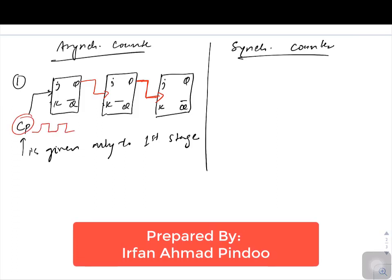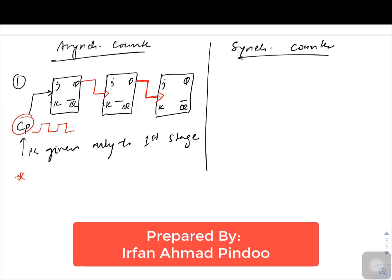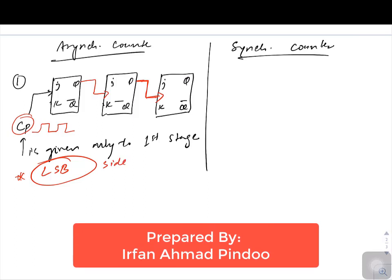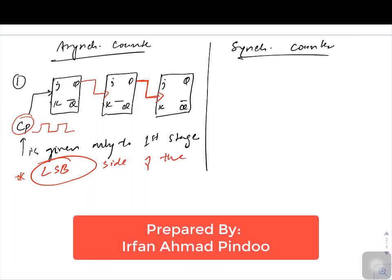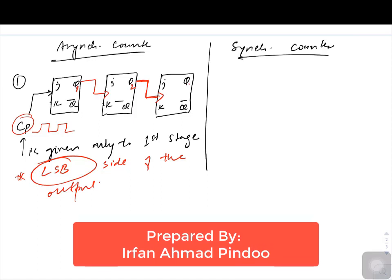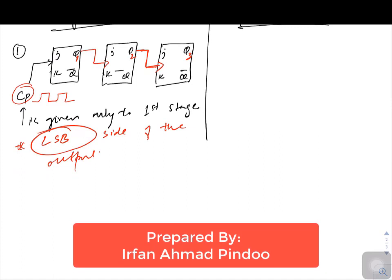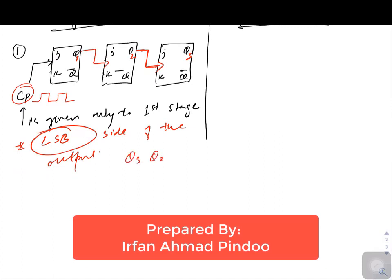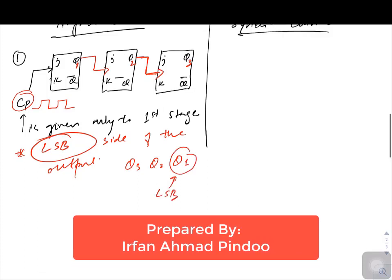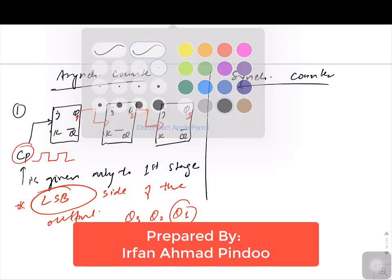The real clock is given only to the first stage, and wherever you are providing a clock, that is the LSB side of the output. So if this is Q1, Q2, and Q3, the output will be in the form of Q3, Q2, Q1 — where Q1 is the LSB.